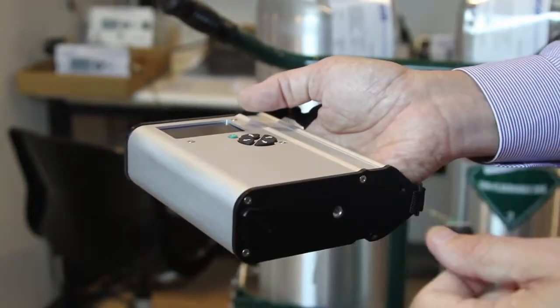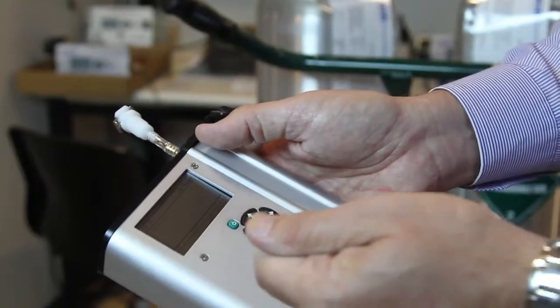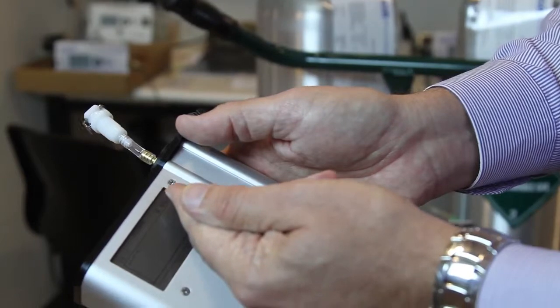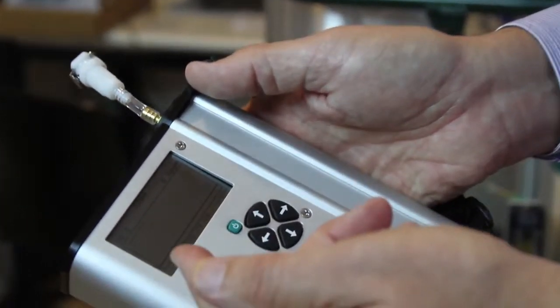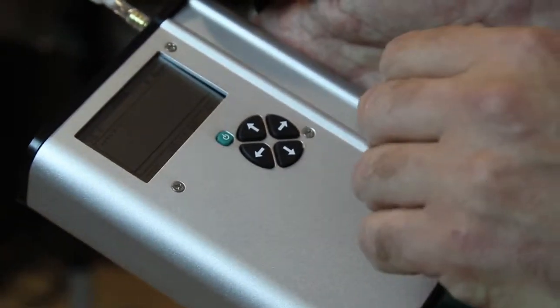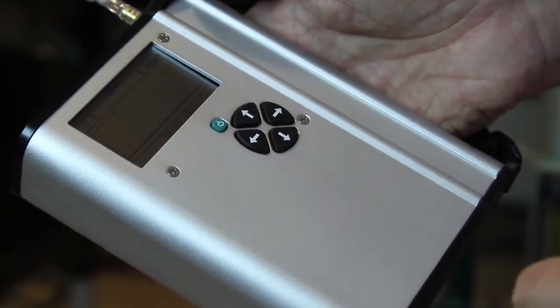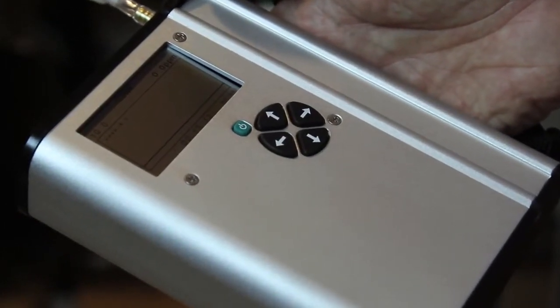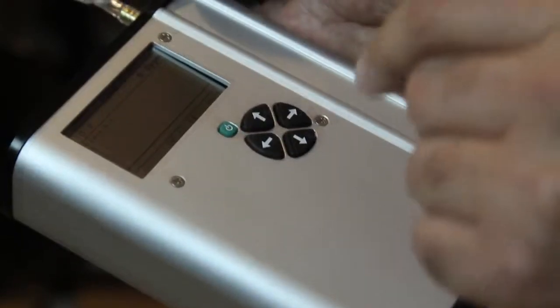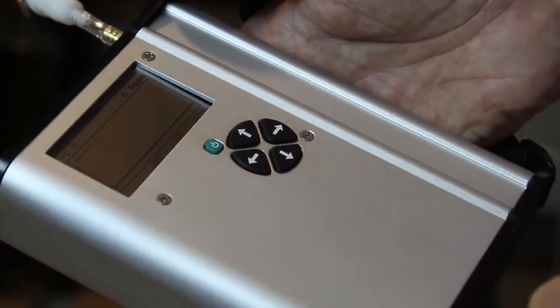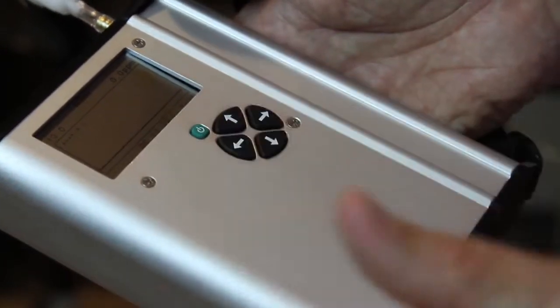You see in the display we're displaying down to 0.1 parts per million. In actuality, this is a 0 to 100 parts per million sensor, and we're displaying one tenth of a part per million or 1,000 parts per billion. Accuracy is 5%, and accuracy below 1 ppm is roughly half a ppm.